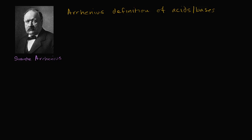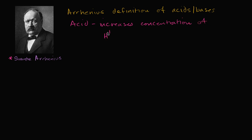The first modern conception of an acid and base comes from Svante Arrhenius, who was the third recipient of the Nobel Prize in Chemistry in 1903. Under his definition, an acid is something that increases the concentration of hydrogen protons when put in an aqueous solution — which is just a water solution.